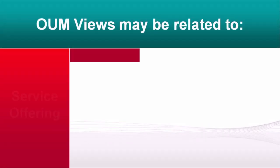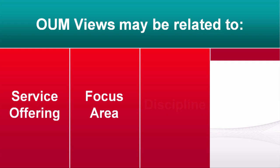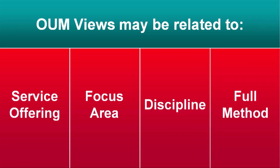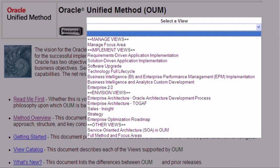Oracle Unified Method is organized in views that provide access to specific method contents. The views may be related to a service offering, a focus area, a discipline, or the full method. Some examples of views available are requirements-driven application implementation, solution-driven application implementation, software upgrade, and more. All predefined views can be accessed from the OUM home page using the Select a View pulldown.